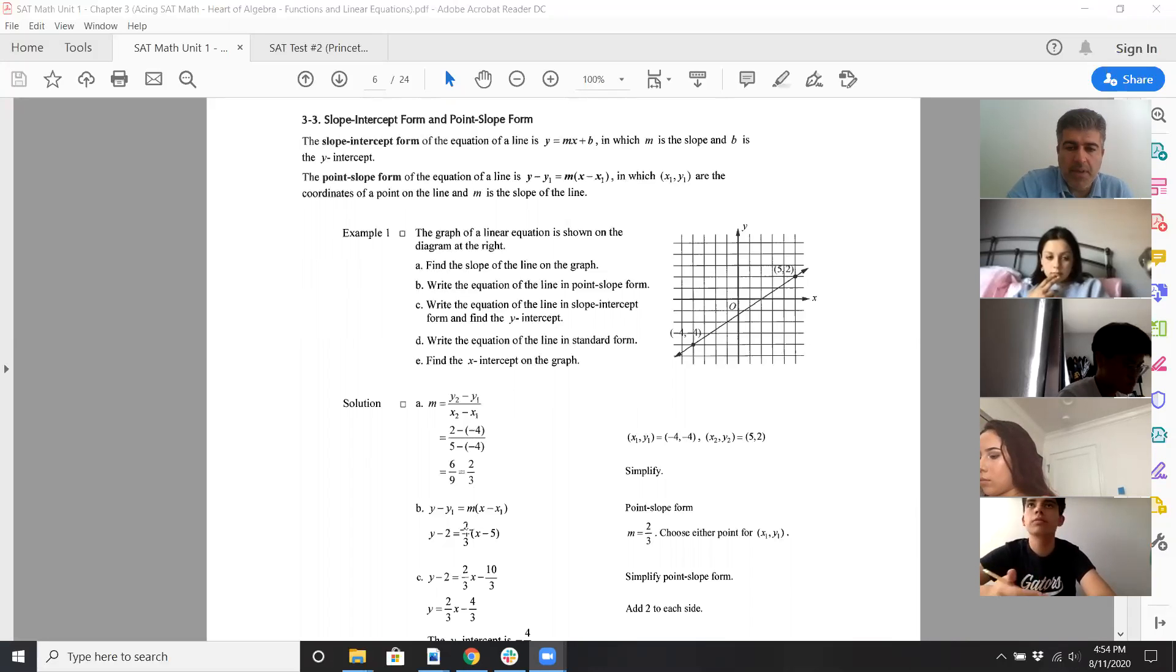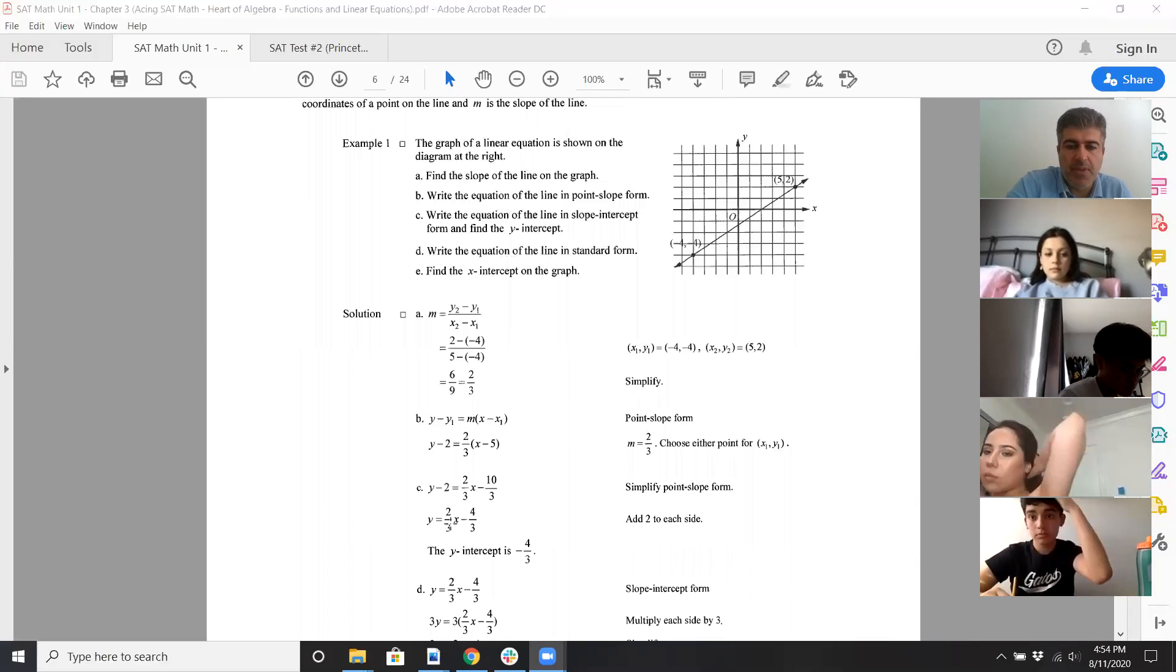So you can write it a couple of ways, it could be y minus 2 equals two-thirds x minus 5, as you see in print there, or it could be y plus 4, if you do y minus negative 4, it's y plus 4 equals two-thirds x plus 4. Same thing.